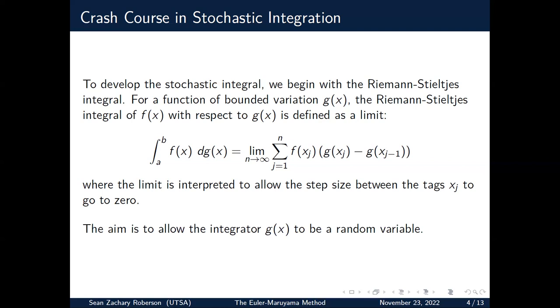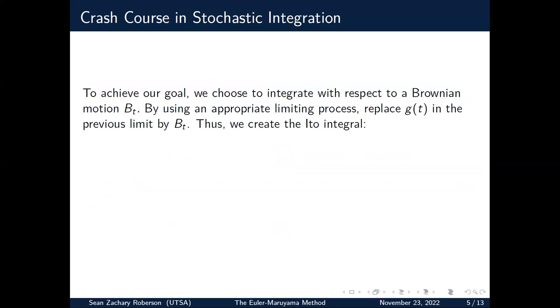And of course, now when we want to talk about stochastic integration, we want to allow our integrator g to be some sort of random variable. And we select this random variable to be somewhat well-behaved. So we will now choose our integrator g to be a Brownian motion. We're going to denote that by B_t. Other texts will usually call this the Wiener process and denote that as W(t). And so we use an appropriate limiting process to replace our function g by this random function B(t).